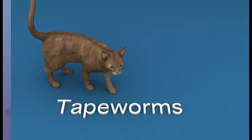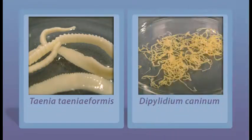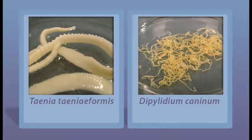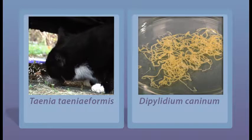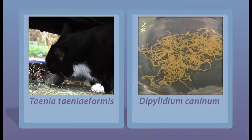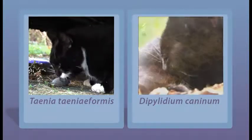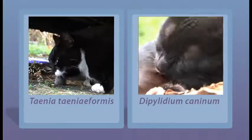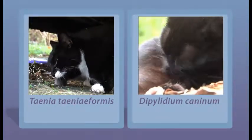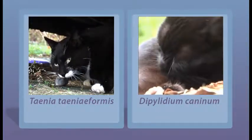Cats are hosts of two fairly common tapeworms, Tinea teneiformis and Dipylidium caninum. Cats may become infected with T. teneiformis after ingesting rodents, while D. caninum can be contracted by ingesting fleas.